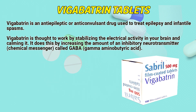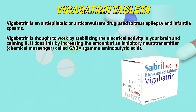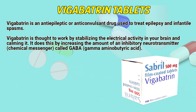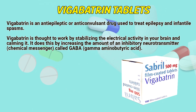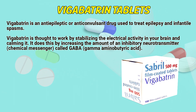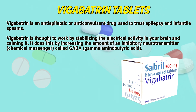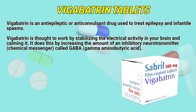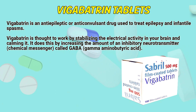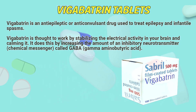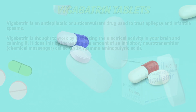Vigabatrin is an anti-epileptic or anti-convulsant drug used to treat epilepsy and infantile spasms. Vigabatrin is thought to work by stabilizing the electrical activity in your brain and calming it. It does this by increasing the amount of an inhibitory neurotransmitter, a chemical messenger called gamma-aminobutyric acid.